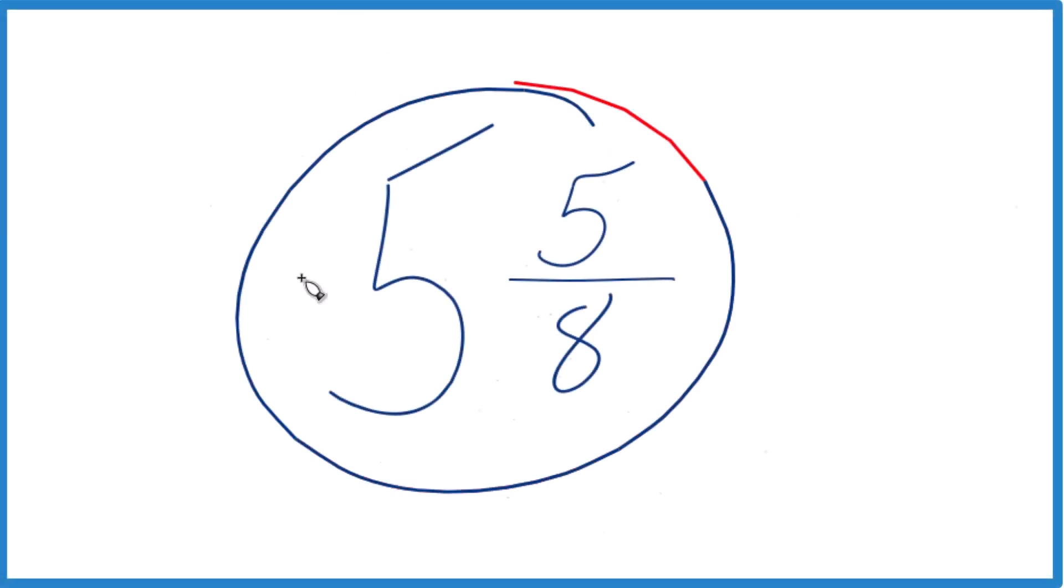Let's write the mixed number 5 and 5 eighths as an improper fraction. Here's how we do that.